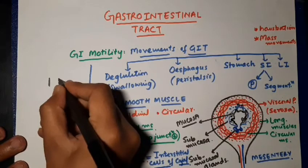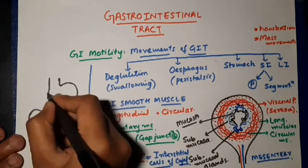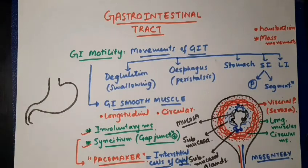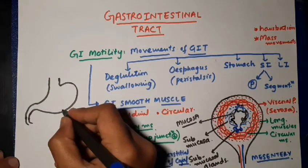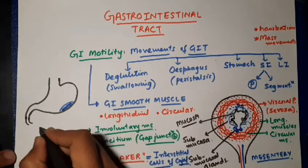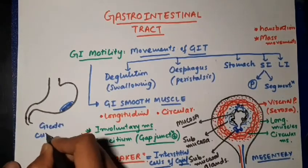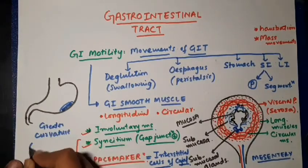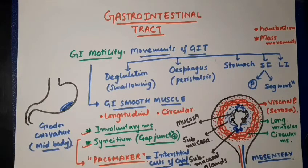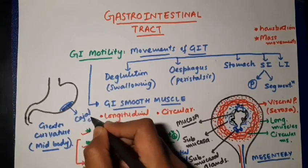The function of the pacemaker in GI smooth muscle is performed by the interstitial cells of Cajal. If we look at the stomach, along the greater curvature in the mid-body region of the stomach, the interstitial cells of Cajal are present. These cells act as pacemaker for GI smooth muscle contraction.